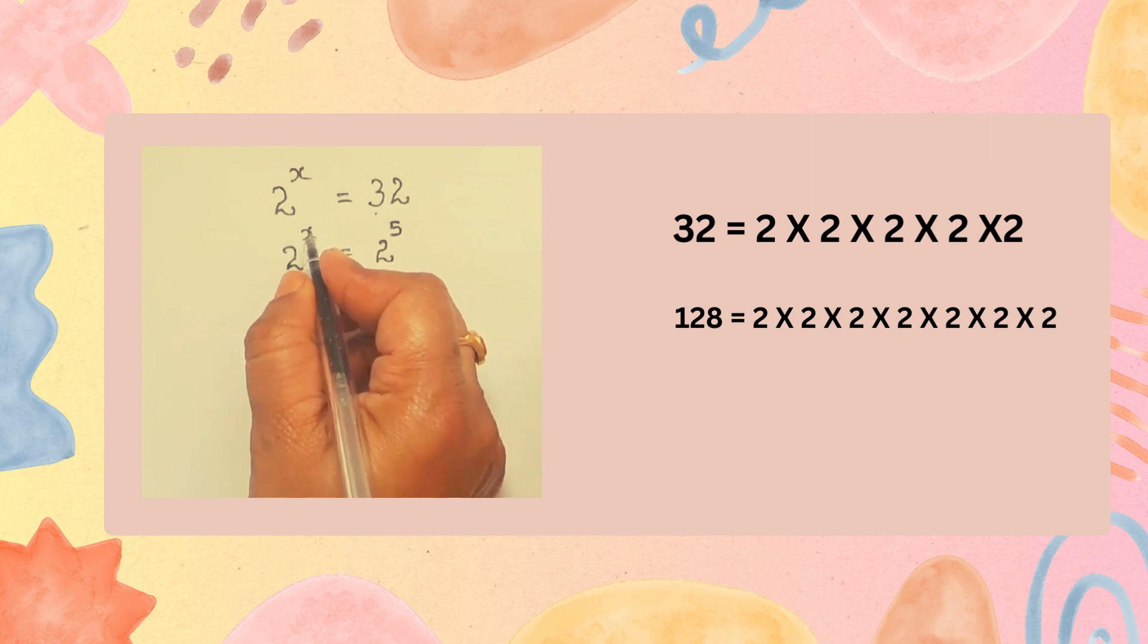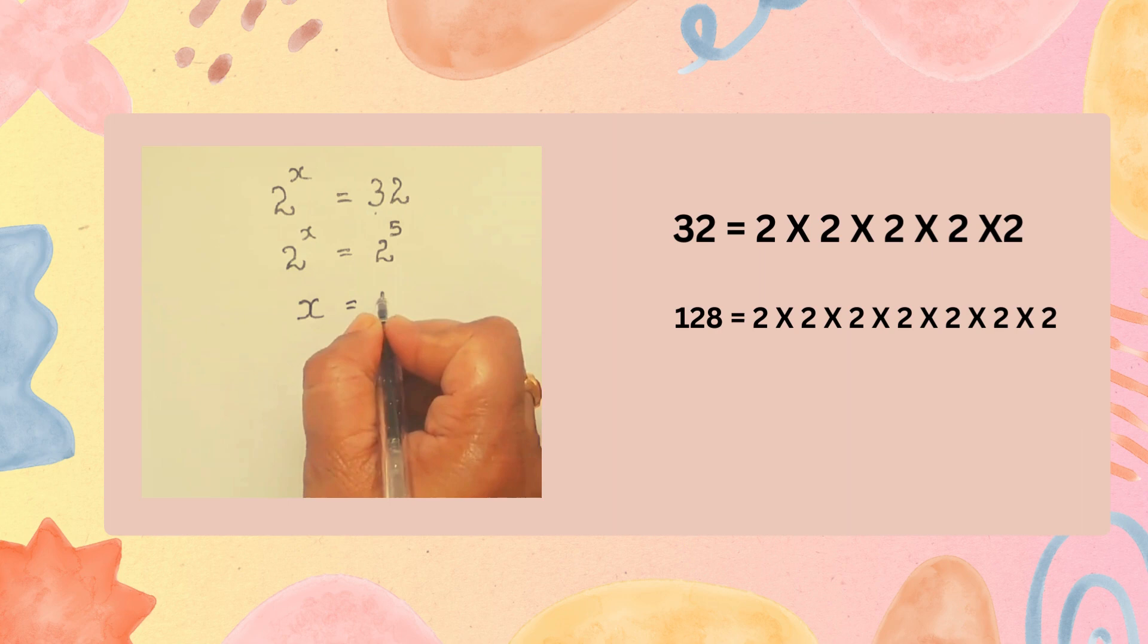Here, 2 to the power of x and here this side our power is 5. So, x is equal to 5.